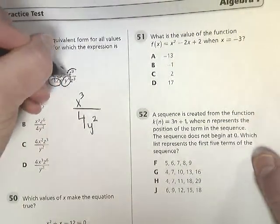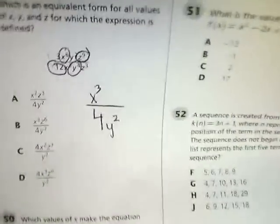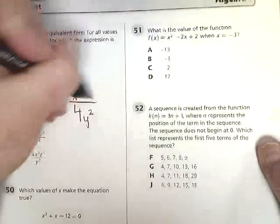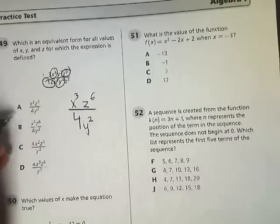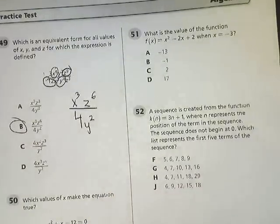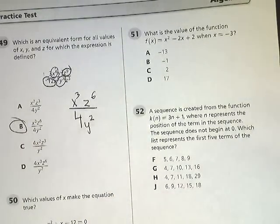And then finally my z's. Well, z to the ninth is way bigger than z to the third. So 9 minus 3 gives you z to the sixth. So I end up with an answer that looks pretty much just like answer B. So the answer to number 49 is simply B.